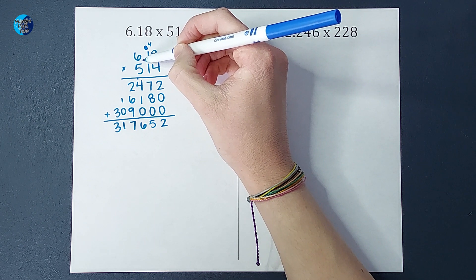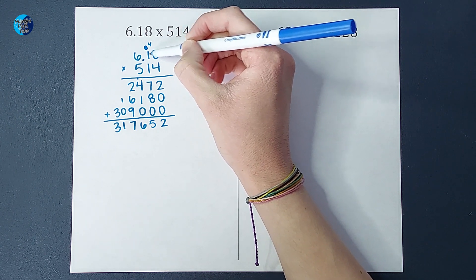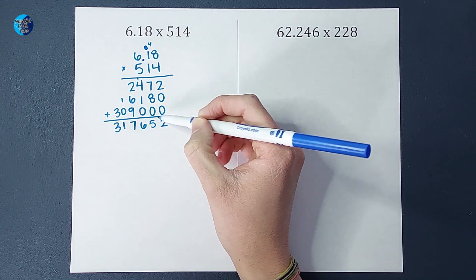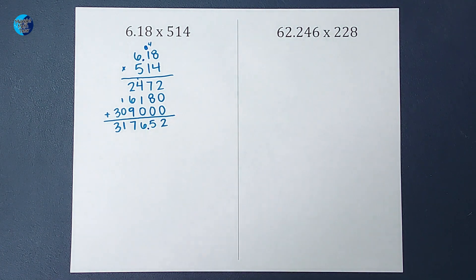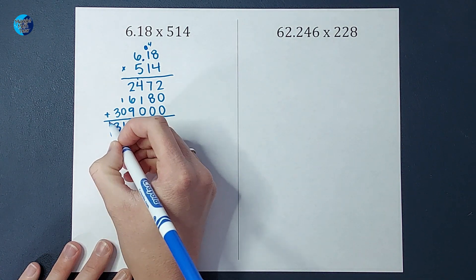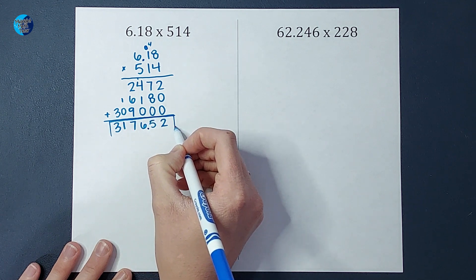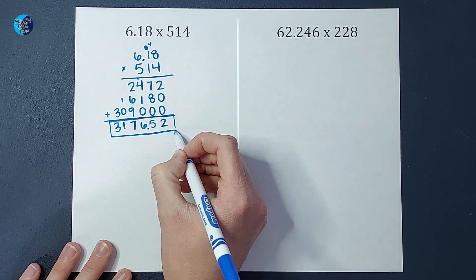Well, I find my decimal up here and I see that there are two numbers behind it. So I also want two numbers behind it in my answer. So my decimal is going to go right there, leaving me with 3,176.52.